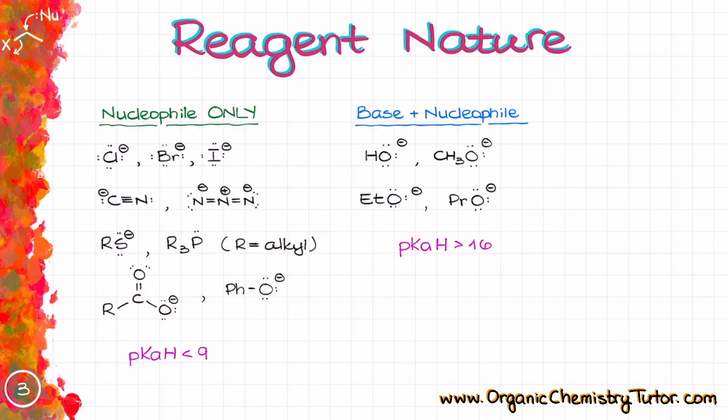Next, nucleophile and base category typically includes non-sterically hindered alkoxides like methoxide, ethoxide, et cetera. Usually those different species have pKaH values that are typically over 16, but under 30 when we are talking about the conjugate acids again. So we are not looking at the pKa values of the base itself, we are talking about the pKaH value of the conjugate acid.